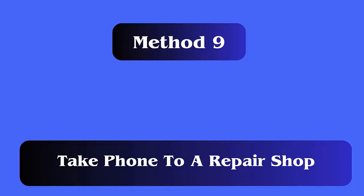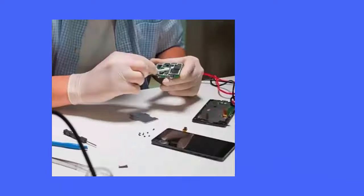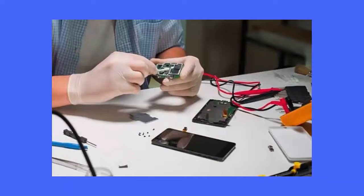Method 9: Take the phone to a repair shop. If none of the above methods help fix the Android blue screen of death error, the last option is to take the device to a repair store. There may be some internal damage you cannot identify on your own, so a professional repair shop is the best option to fix blue screen issues on your phone.